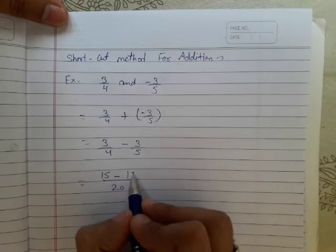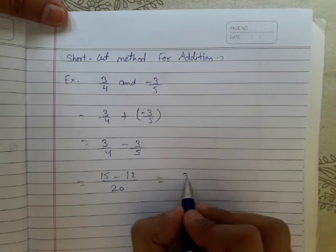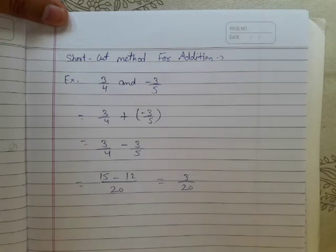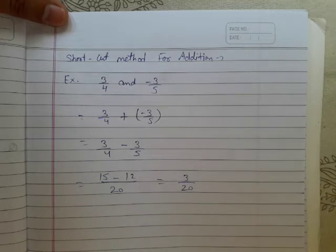So from here I get 15 minus 12 equals 3, giving us 3/20. This is the answer. This is the shortcut method which we can use for addition.